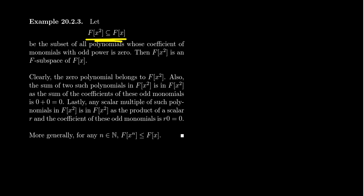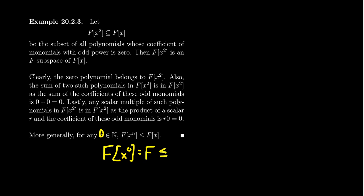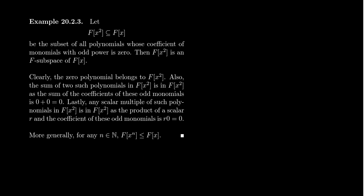This shows that F[x²] is a subspace of F[x] — also an infinite-dimensional vector space. This strategy works for any natural number n: F[xⁿ] is a submodule of F[x]. If zero belongs to the natural numbers, then F[x⁰] is just F itself, which is a subspace of F[x] since it is closed under scalar multiplication as it consists of scalars.